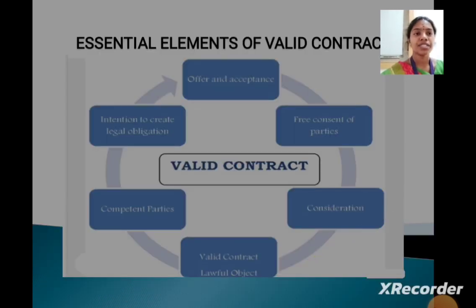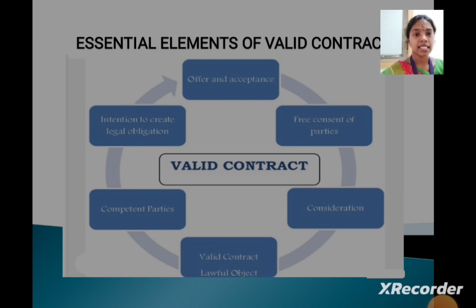Essential elements of a valid contract: offer and acceptance, free consent of parties, consideration, lawful object, competent parties, and intention to create legal obligation.